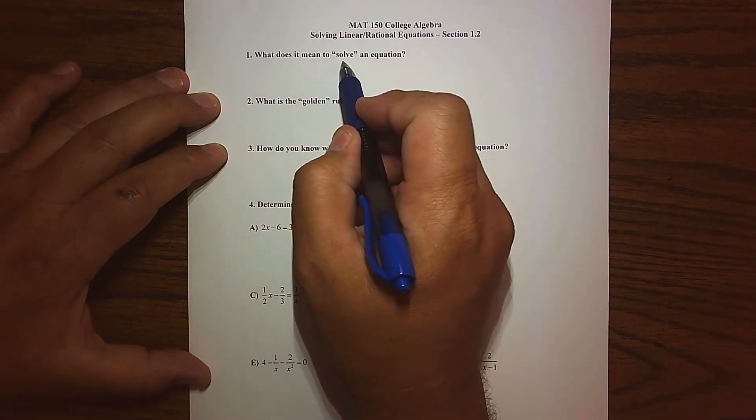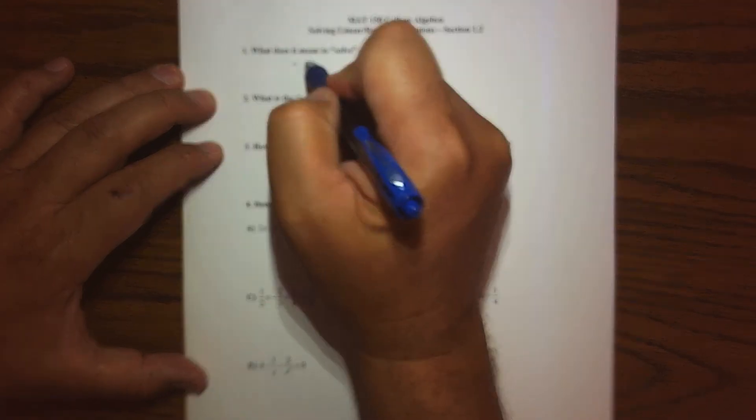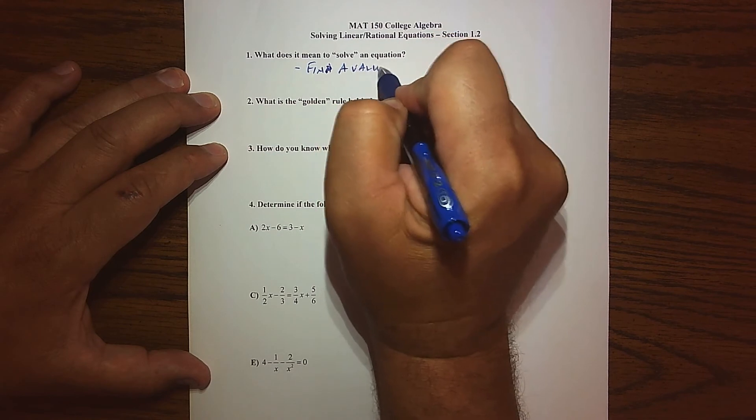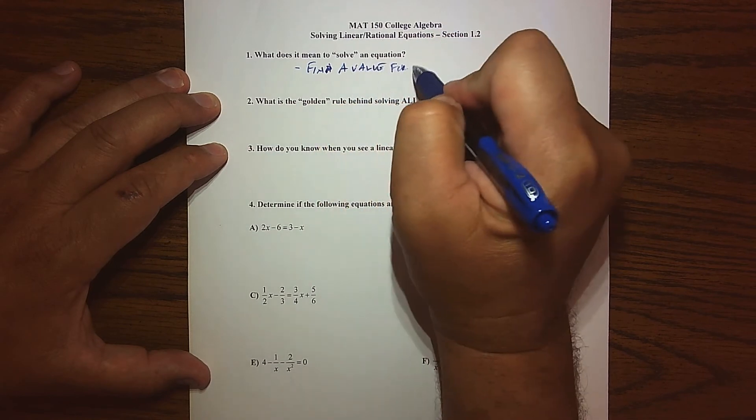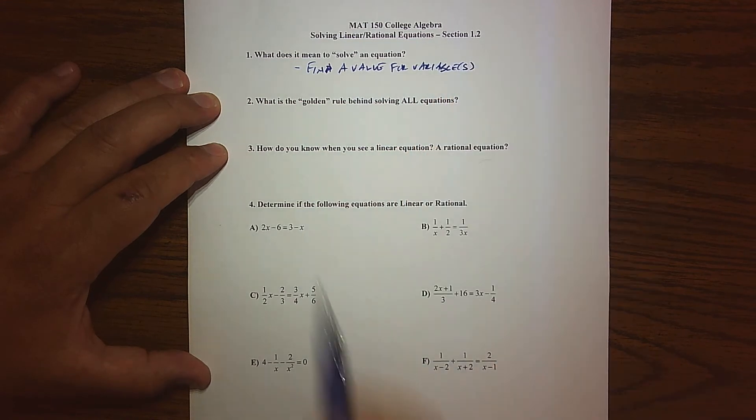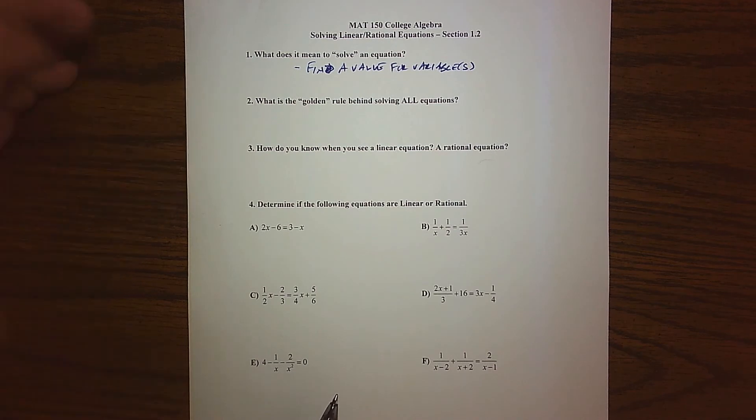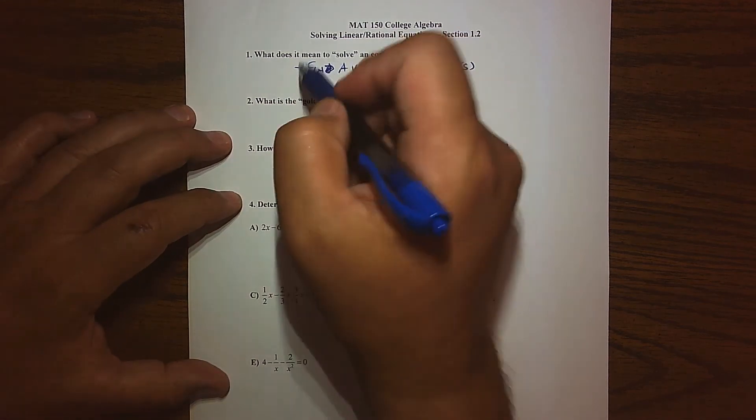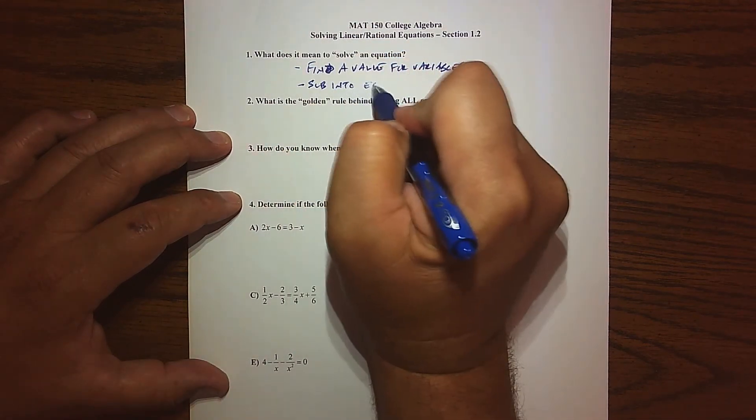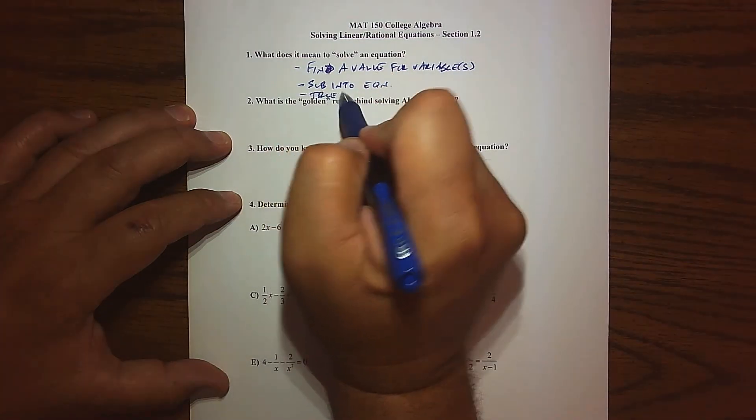When we're asked to solve an equation, we're basically asked to do three things. Number one, we have to find a value for the variable, and there might be more than one variable. So that's the first thing, we've got to find a value for a variable. And then the second thing is, we sub into the equation, and then what we get is we get a true statement.